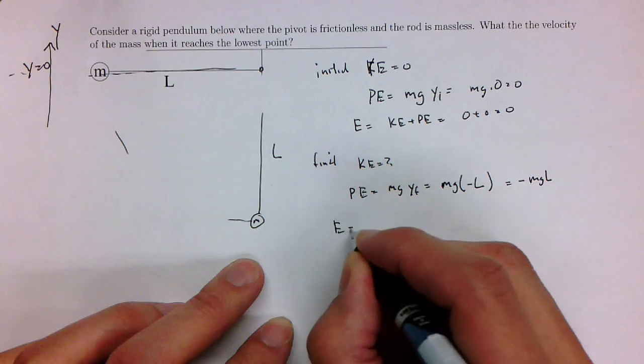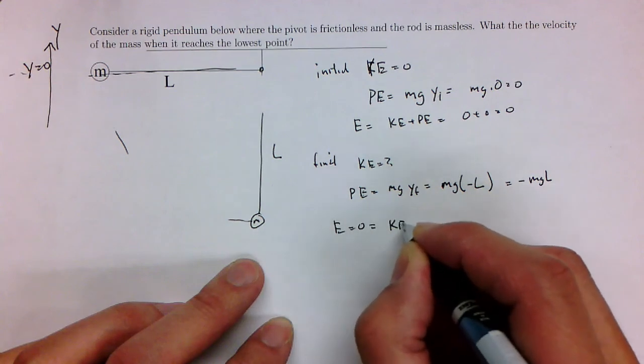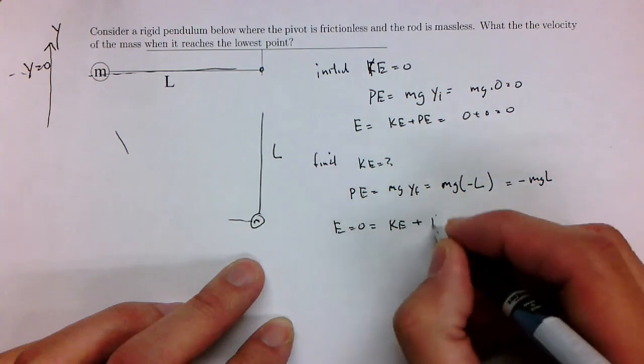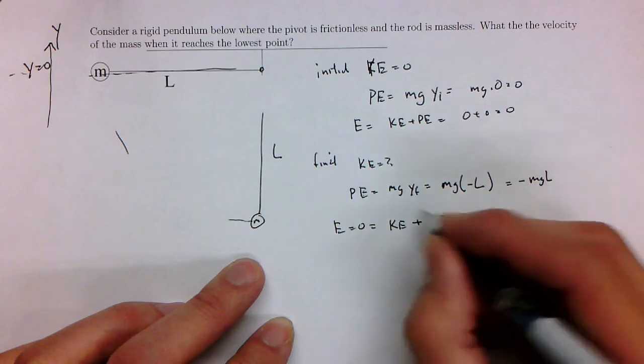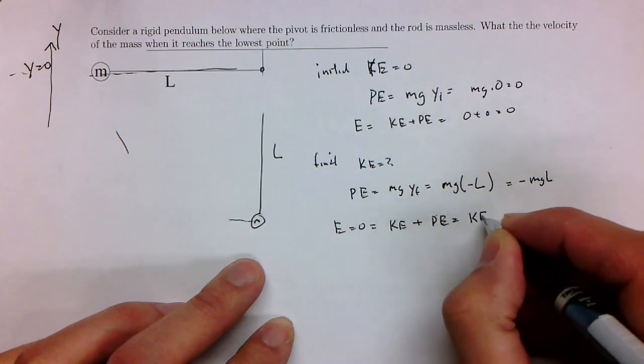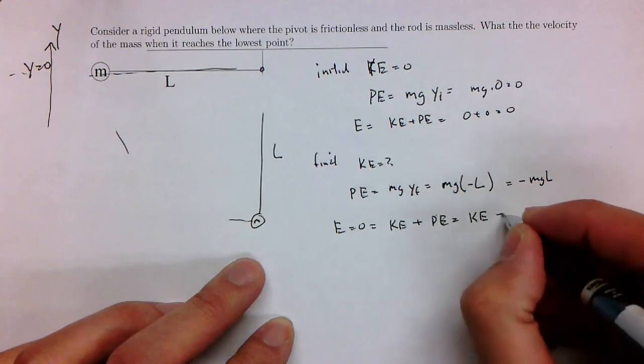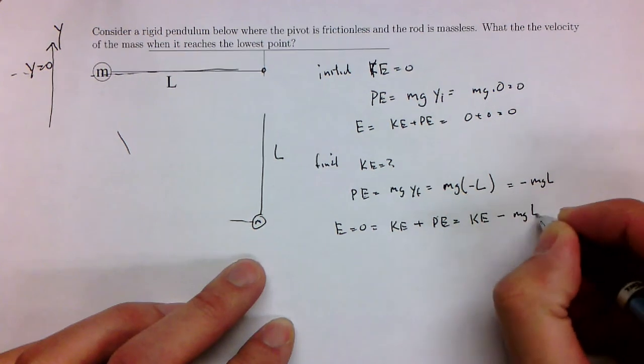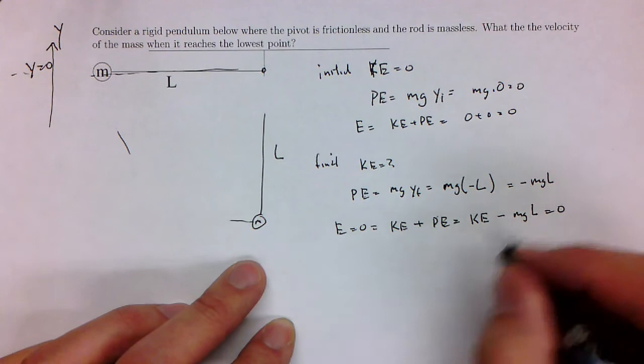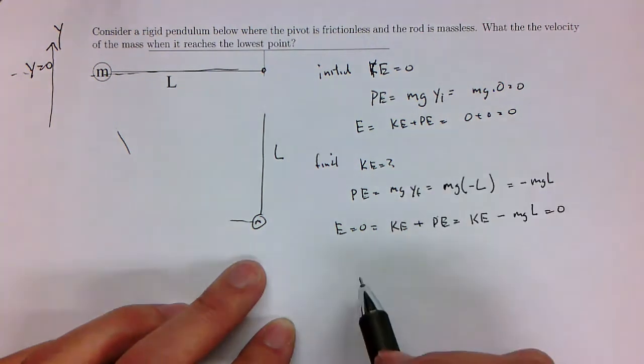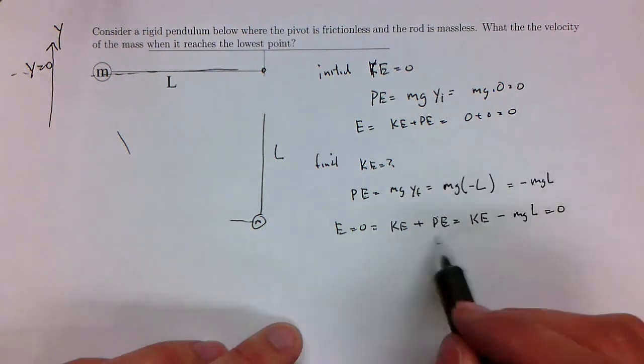So the total energy, which is equal to zero, is equal to kinetic energy plus the potential energy. And this is going to be equal to kinetic energy, something I do not know yet, but I will find out shortly, and the potential energy is just minus mg L. And all this is equal to zero because the initial energy was equal to zero. Initial total energy, that is.